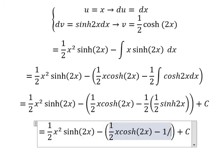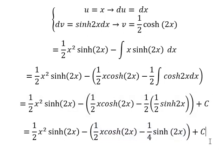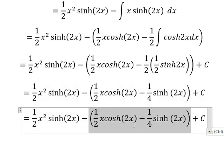This becomes negative 1/4 sinh(2x). We open the parenthesis of this one and we get the final answer: 1/2 x² sinh(2x) minus 1/2 x cosh(2x) plus 1/4 sinh(2x) plus C.